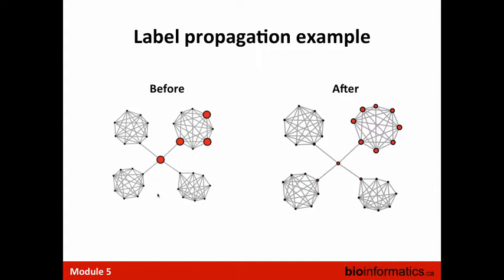Here's another label propagation example showing that groups of genes with many strong interactions get high scores. Score is indicated by node size. Starting from four query-list genes, the scores of nodes in a highly connected cluster reinforce each other during label propagation. A gene connected to many different clusters doesn't cause much propagation to those other clusters, so label propagation cleans up the overscoring that a direct interaction approach would give.